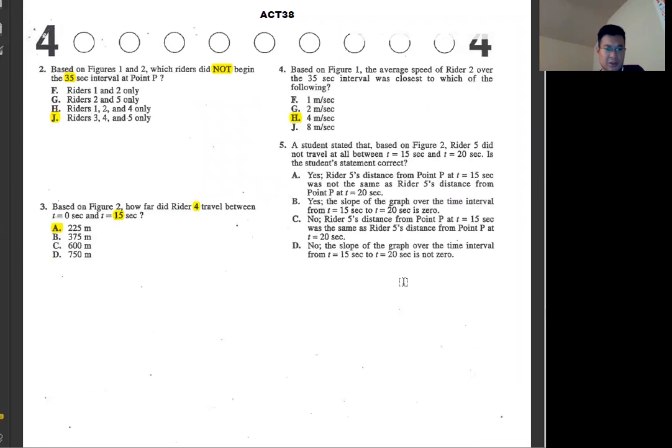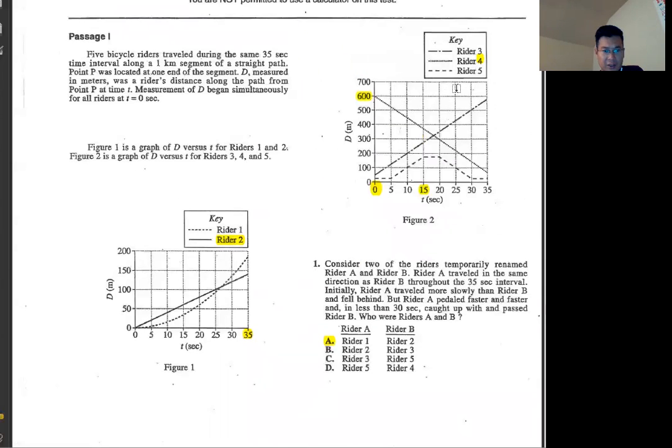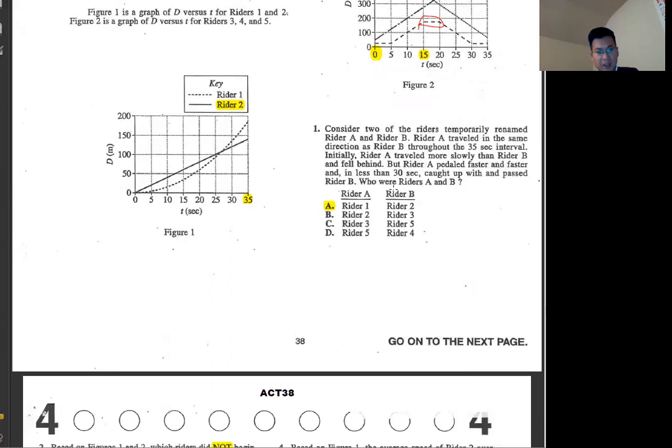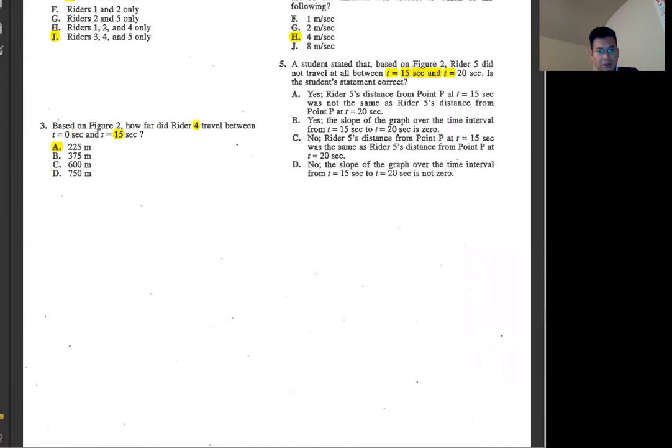Number five, students state that based on figure two, writer five did not travel at all between these two positions. Five is this one, between this position here. Distance-wise, it didn't move at all. Then it should stay the same. So it should be yes because it didn't. The slope is zero. That's why slope means the rate in this case.